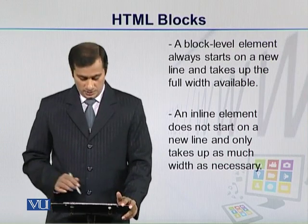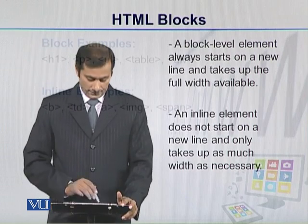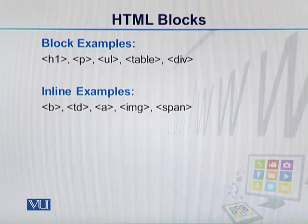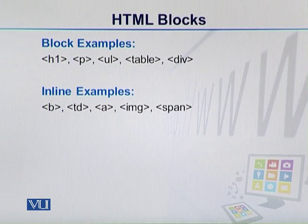ہمارے پاس typical block level elements ہیں جیسے h1 کا tag، paragraph کا tag، list کے tags، table کا tag، اور division کا tag۔ اسی طرح inline examples میں ہمارے پاس bold کا tag، anchor کا tag، image کا tag، span کا tag اور اس طرح جتنے بھی elements ہمارے پاس HTML میں ہیں وہ یا تو block ہیں یا inline۔